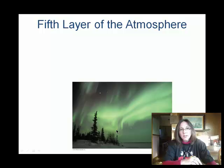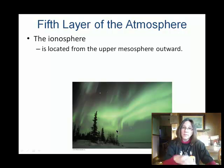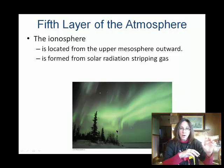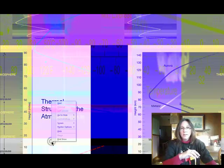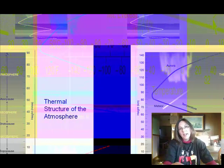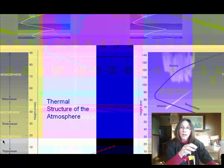One other layer I wanted to talk about is the ionosphere. We can think of the ionosphere as the upper part of the mesosphere outward. As the word 'ion' in ionosphere might imply, there are ions in the ionosphere. Those ions — charged particles — are created because of radiation from the sun.